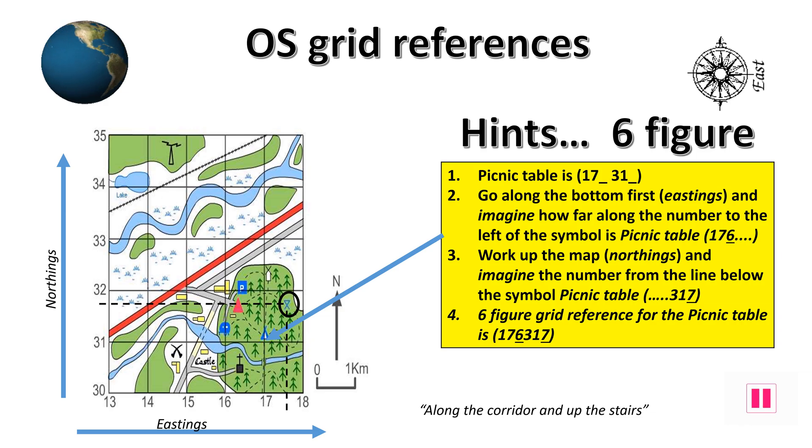Six-figure grid references are just a way of showing exactly where something is within the square. We already know that the four-figure grid reference for the picnic table is 1731. To work out six-figure grid references, you just imagine that the square is split into 100 little squares, 10 across by 10 upwards. The six-figure grid reference for the picnic table is therefore 17 and so many tenths across and 31 and so many tenths upwards.